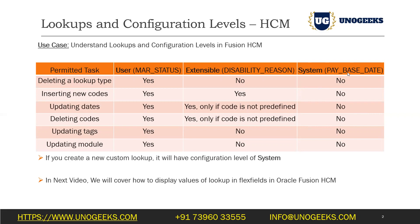With System level, you can only view the entries in the lookup but you can't add new entries or delete the existing ones. For Extensible — as you can make out from the name — if you take the Disability Reason lookup for example, Oracle has attached a configuration level of Extensible, which means Oracle has given a few entries in the lookup.